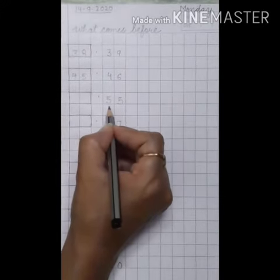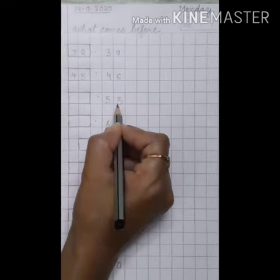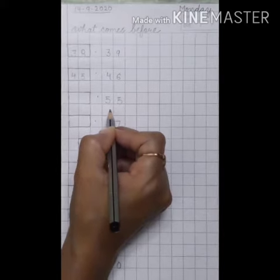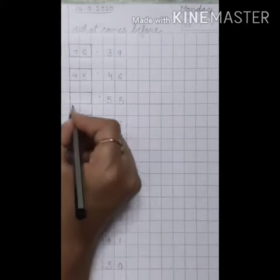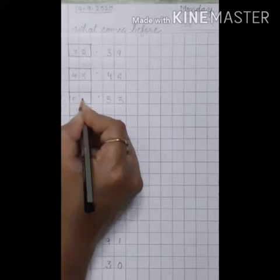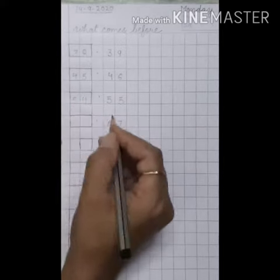Our next number is 55. What comes before 55? 54, 55. 54 comes before 55.